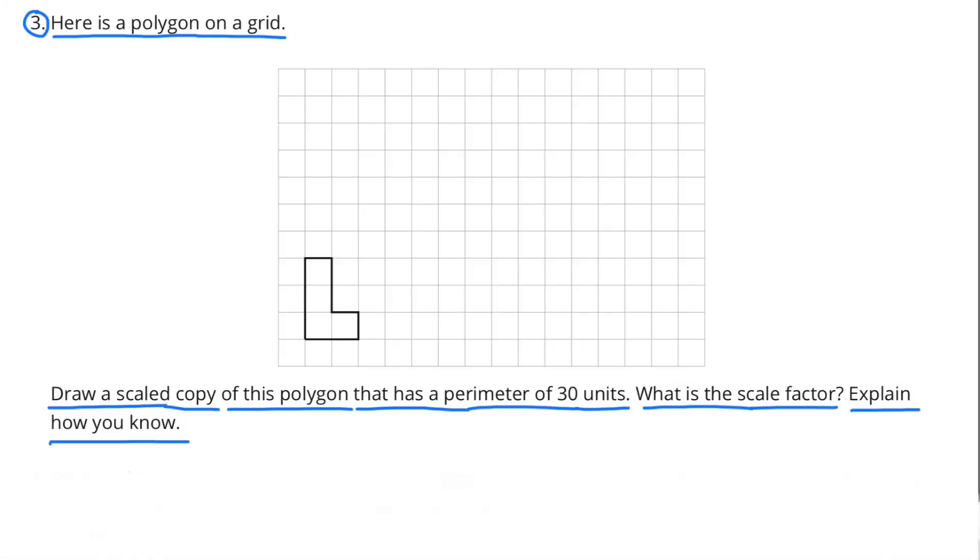Number 3. Here is a polygon on a grid. Draw a scaled copy of this polygon that has a perimeter of 30 units. What is the scale factor? Explain how you know.